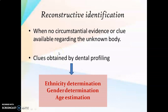Reconstructive identification is done when there is no circumstantial evidence or clue available regarding the unknown body. The clue can be constructed by determining the ethnicity, determining the gender, and also by estimating the age. This process is known as gender profiling, and there are various methods for ethnicity determination, gender determination, and age estimation. By using these various methods, gender profiling can be done which can construct a clue about the unknown human body. If we then have a clue or suspicion, we can go back to do comparative identification, helping to establish the identity of the individual.